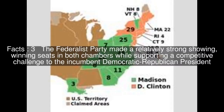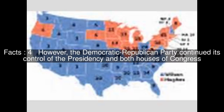The Federalist Party made a relatively strong showing, winning seats in both chambers while supporting a competitive challenge to the incumbent Democratic-Republican president. However, the Democratic-Republican Party continued its control of the presidency and both houses of Congress.